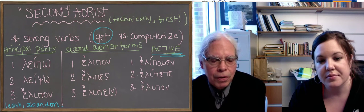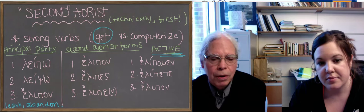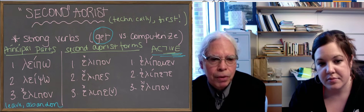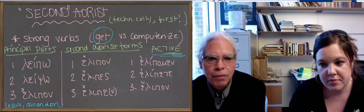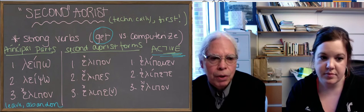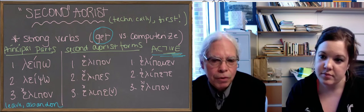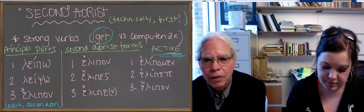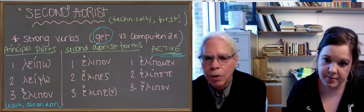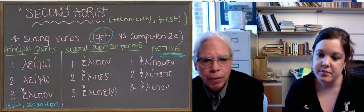But if you notice, the first principal part, the present, in other words, is leipo, and the root is leip, just like any other verb. The future is leipso, in which you add the s to make the future, and there's nothing different about those forms from luo and paideu and pempo and so forth.